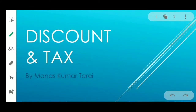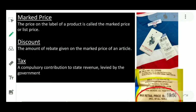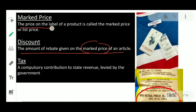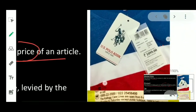Good morning students. Today we will learn about discount and tax. On some special occasions, shopkeepers, malls, or online stores offer some rebate on their products, and that rebate is known as discount. The definition of discount is the amount of rebate given on the mark price of an article. The price on the label of a product is called mark price.